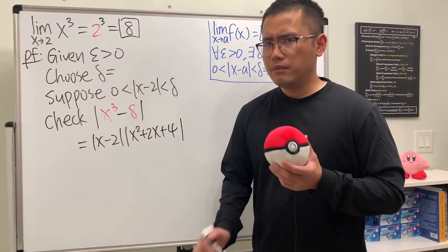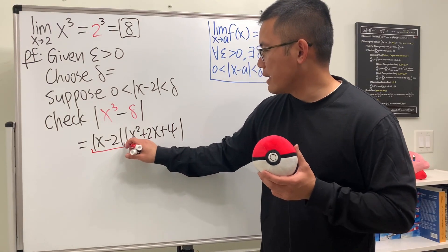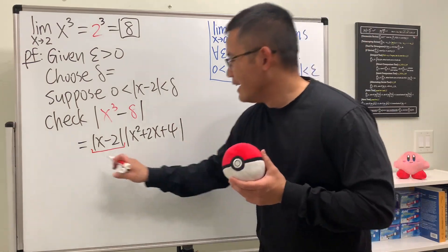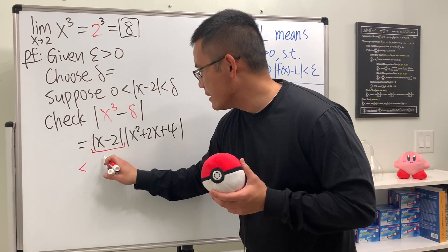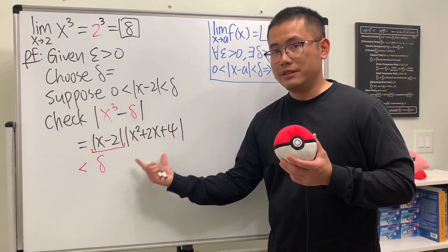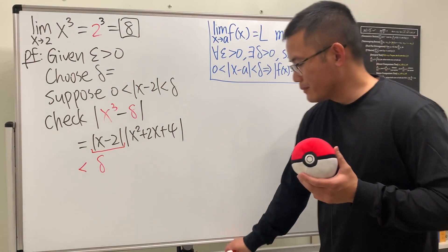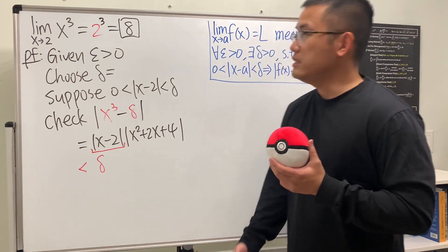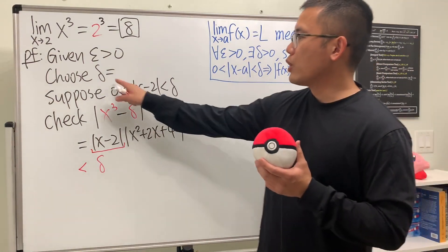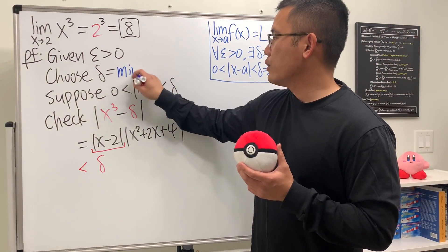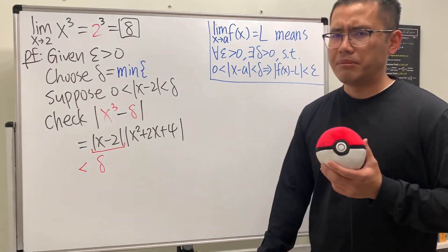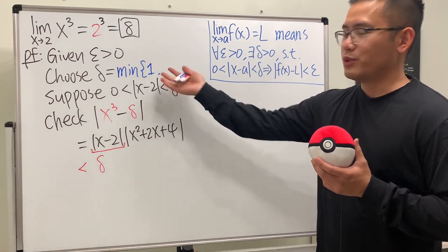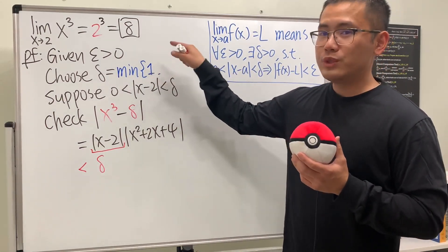Now we have x minus 2 in the absolute value, which we know is less than delta, so we can replace that with delta. Now we just have to figure out a bound for the remaining factor. This is the same approach as the quadratic case in the previous video, so we'll use that strategy here.